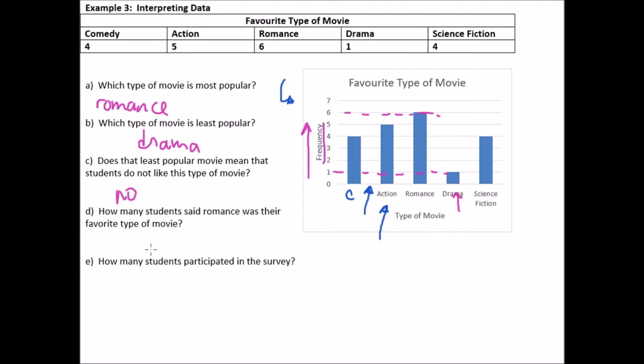So it's just your favorite type of movie. Maybe drama is everybody's second favorite type of movie. It would still reflect that drama has a low number of people choosing it as the favorite. Okay. And how many students said romance was their favorite movie? We already said this, it was six. How many people, how many students participated in the survey? So we can either get this from the graph or we can actually get it from just these numbers right here.